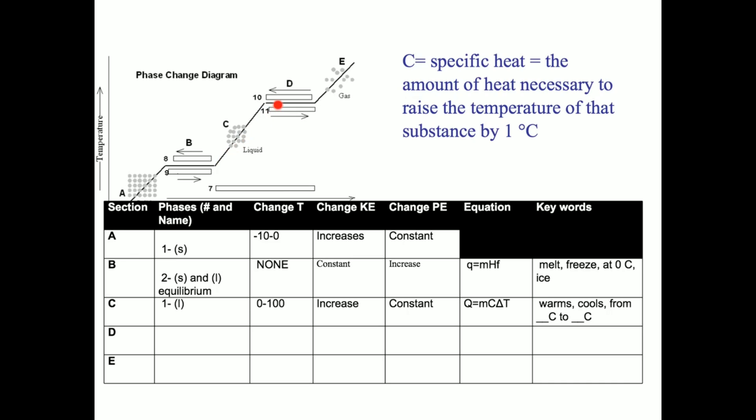In section C, we have a liquid that is warming to its boiling point. Here, the liquid has a constant potential energy as the particles are still close together, but moving past one another. Our kinetic energy or temperature is increasing.